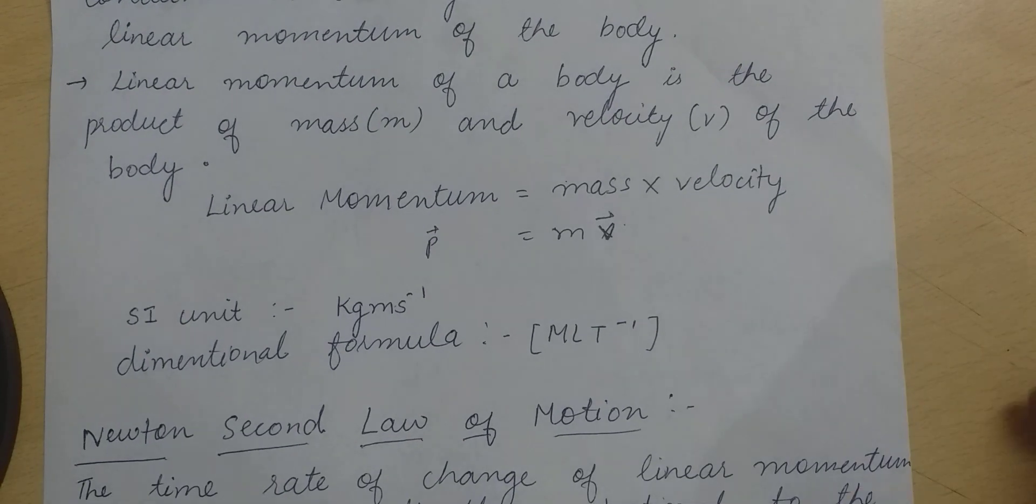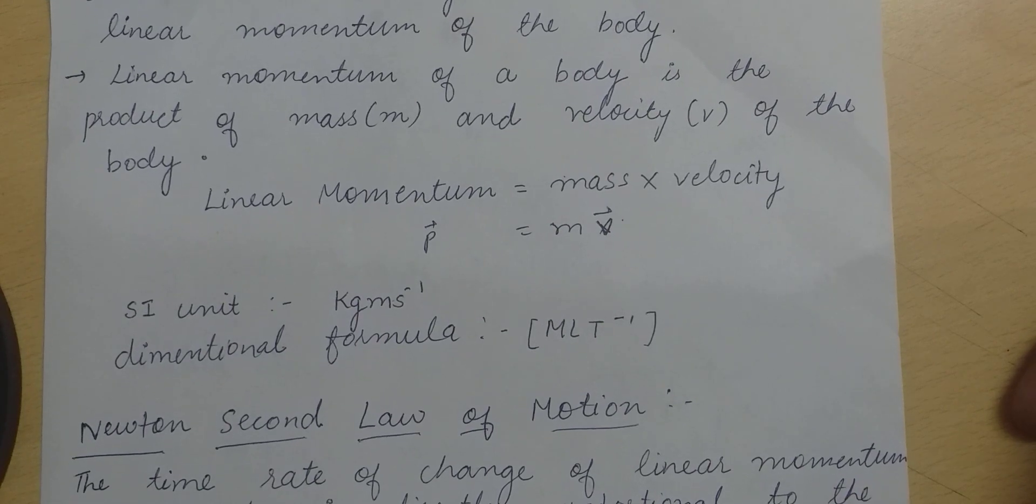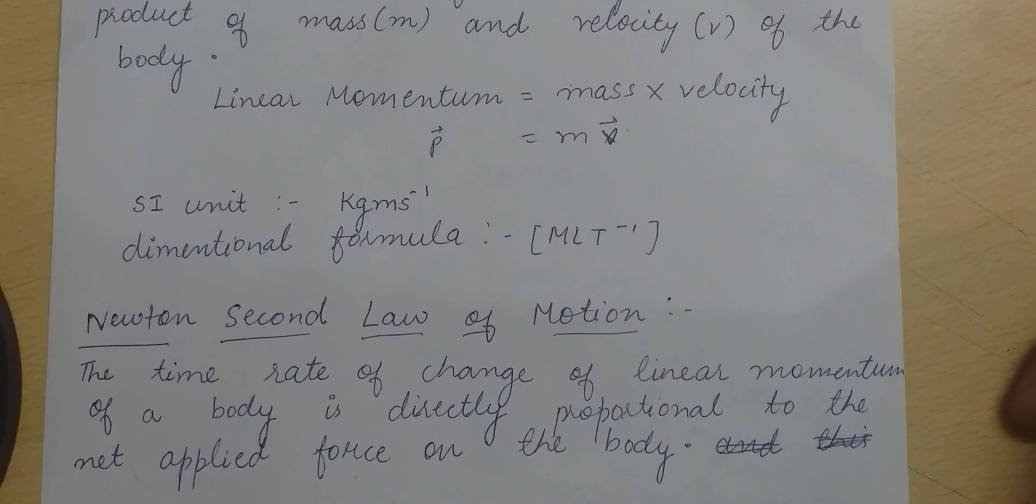This can also be written as p vector equal to m times v vector. SI unit is kg meter per second. Dimensional formula is MLT^-1.